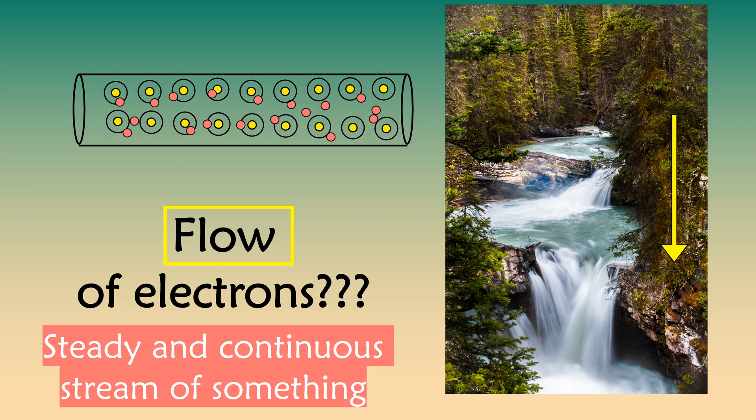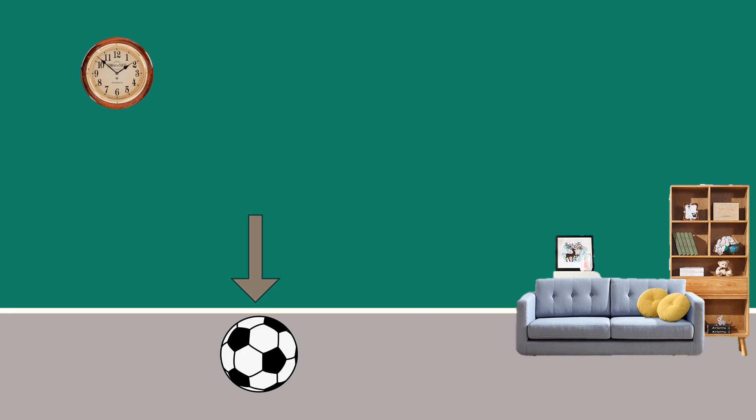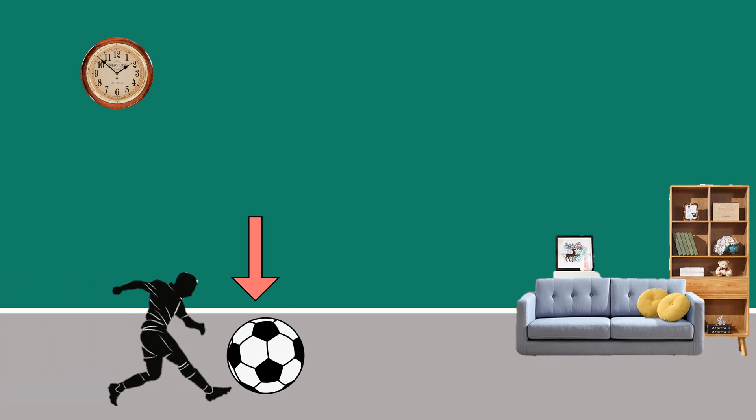So what should we do to move all the electrons to flow in one particular direction? If we need to move this ball from one point to another, what should we do? We just have to apply force on it.